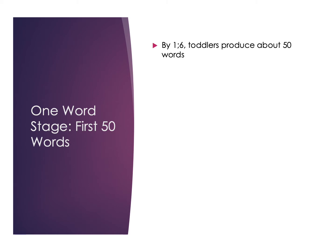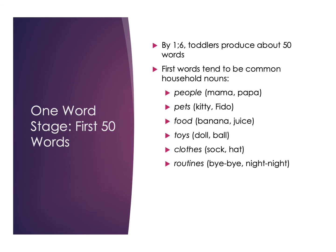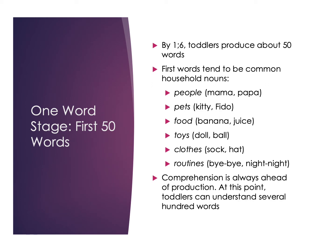Very quickly, children go from a first word to the first 50 words. By about a year and a half, toddlers can usually produce around 50 words — common household nouns and frequently heard things like people's names, pets, common foods, toys, clothes, and routine phrases like 'bye-bye' and 'night-night.' At this stage, comprehension is far ahead of production. Even though they may only speak about 50 words, they're starting to understand several hundred words — they'll understand what you're saying but may not have the vocabulary yet to respond fully.